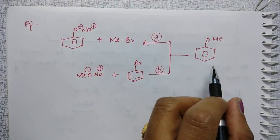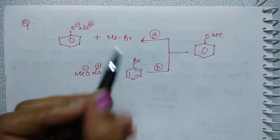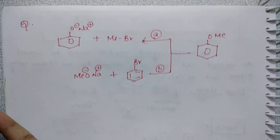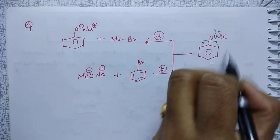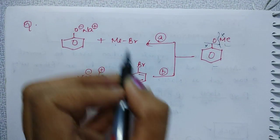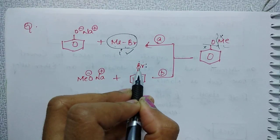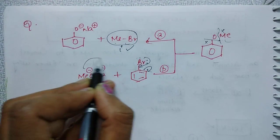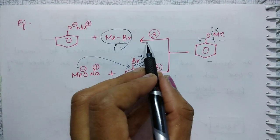See the next question: you want to prepare anisole, that is methoxybenzene. There are two routes — Route A and Route B. Identify the alkyl halide part in each. One part is a primary alkyl halide — it undergoes SN2. The other part is an aryl halide — the lone pair and pi bond are in resonance, giving partial double bond character to the C–X bond, so the halogen cannot leave. Therefore Route B is not favorable, but Route A is favorable.